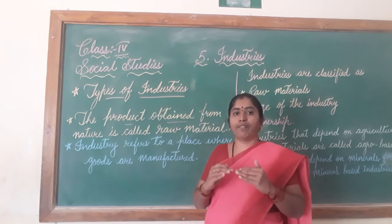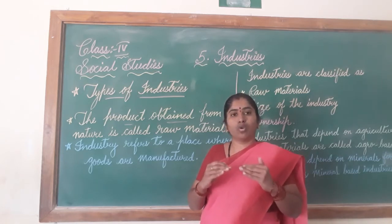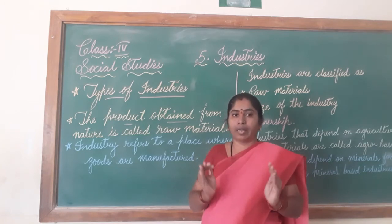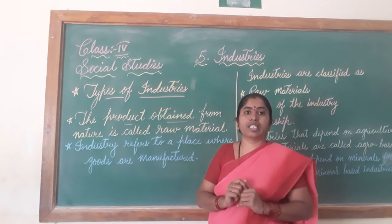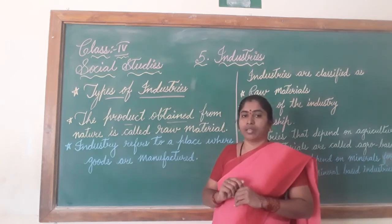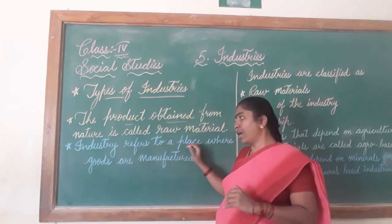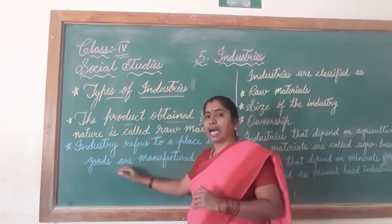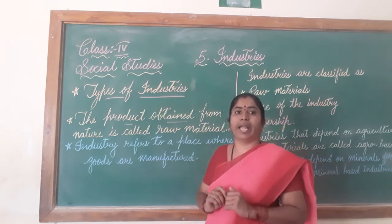These raw materials are manufactured - they are made into goods. Where is this done? It is done in an industry. Industry refers to a place where goods are manufactured.